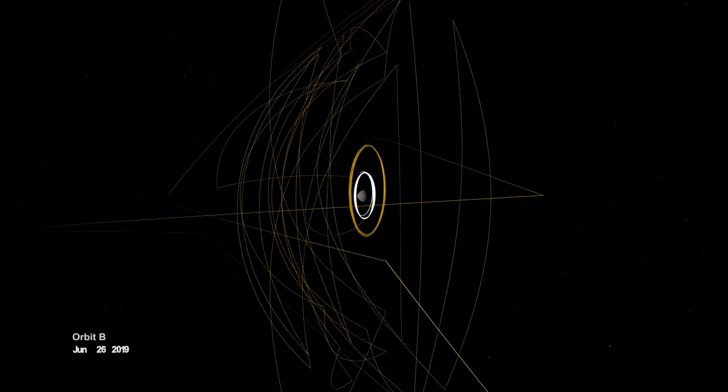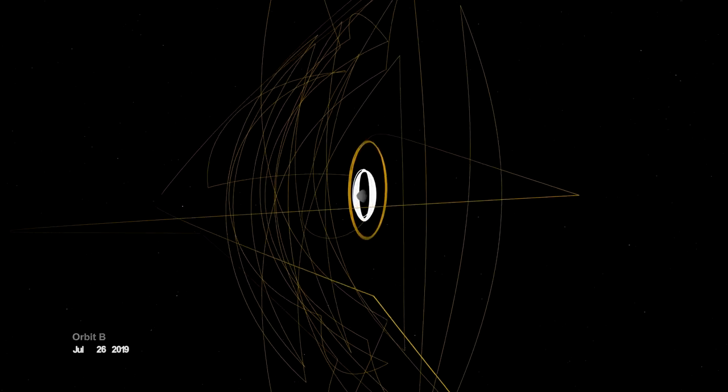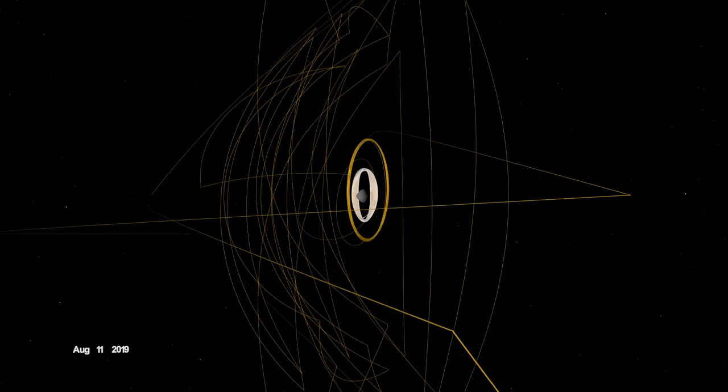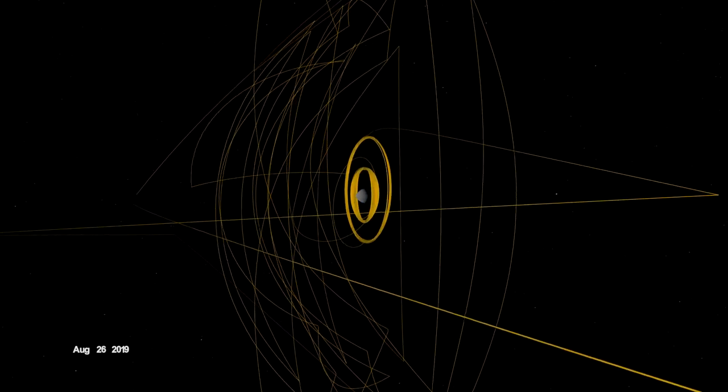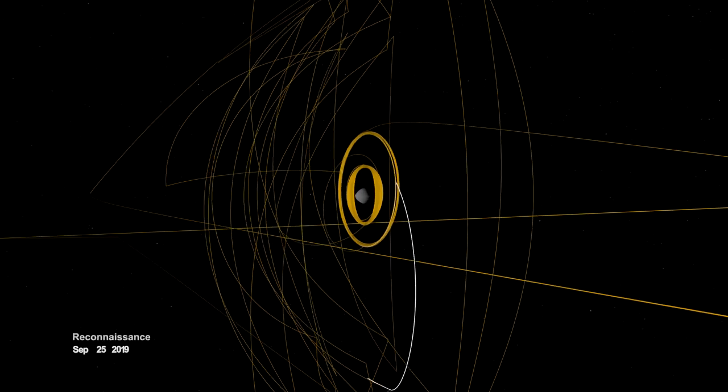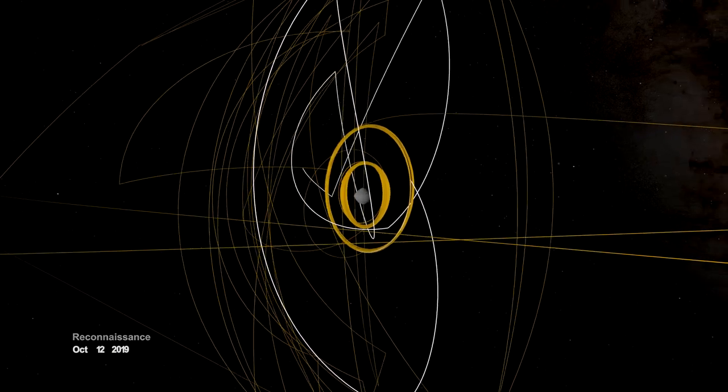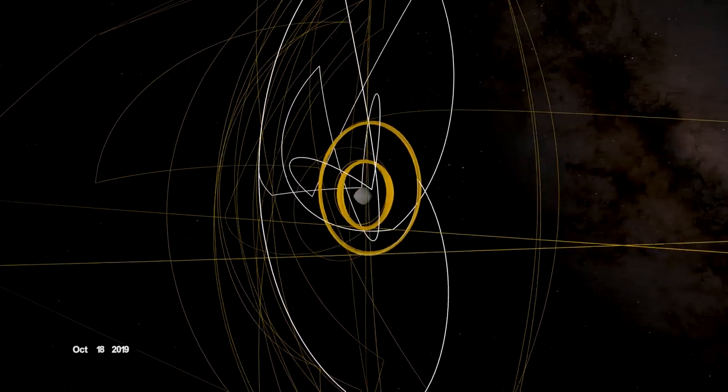On June 12, the spacecraft entered a new orbit at an altitude of just 680 meters, setting another record and establishing a home orbit for the remainder of the mission. In September, it began reconnaissance on four candidate sample collection sites, potential locations on Bennu to touch down and collect a sample later in the mission.